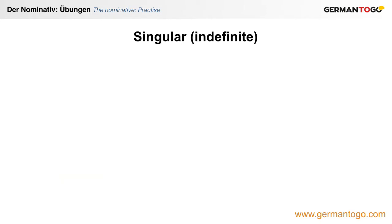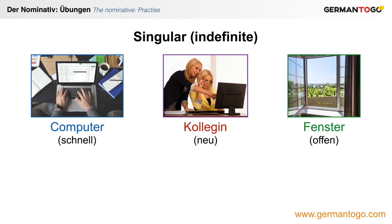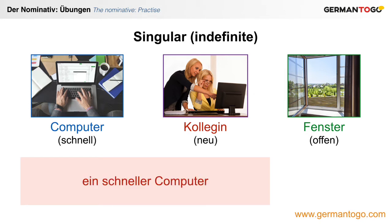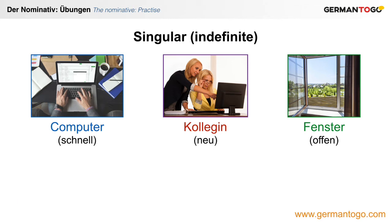Now let's take a look at the indefinite articles. We've got the same nouns — Computer, Kollegin und Fenster. How do you say a fast computer? Ein schneller Computer. A new colleague? Eine neue Kollegin. And an open window? Ein offenes Fenster. The articles are ein, eine, and ein, and the adjective takes the endings of the definite articles.